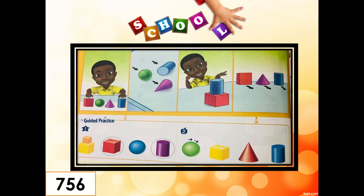Let's proceed now with our lesson today. On page 756. Let's do the first one, example number one. We will look first at the picture on the left. After that, we will draw a circle around the objects that can stack as well. Look at this picture that can stack on the left, and then figure out which of the following solid figures can stack also. Remember KG, a solid figure can stack if it has a flat surface.